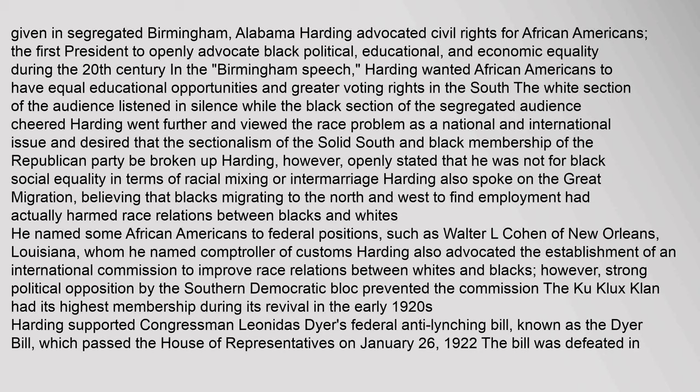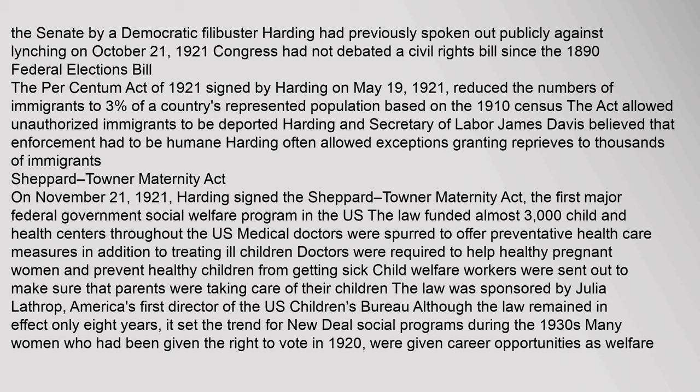Harding also advocated the establishment of an international commission to improve race relations between whites and blacks; however, strong political opposition by the Southern Democratic Bloc prevented the commission. The Ku Klux Klan had its highest membership during its revival in the early 1920s. Harding supported Congressman Leonidas Dyer's federal anti-lynching bill, known as the Dyer Bill, which passed the House of Representatives on January 26, 1922. The bill was defeated in the Senate by a Democratic filibuster. Harding had previously spoken out publicly against lynching on October 21, 1921.